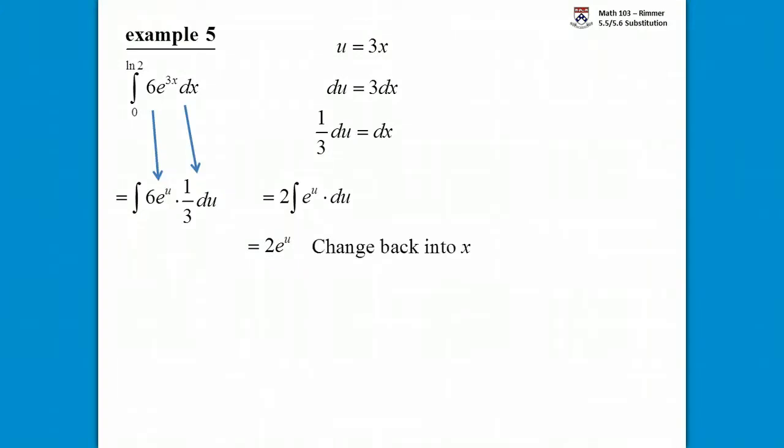So now we need to sub back in. All our u need to be replaced by x, the 3x. So now we have 2, keep the 2 outside, and focus on the e to the 3x. And we're about to perform the fundamental theorem of calculus where we plug in the upper limit, we plug in the lower limit, and we subtract. And so x gets replaced by log 2, and then x gets replaced by 0.